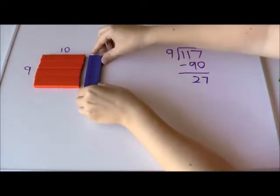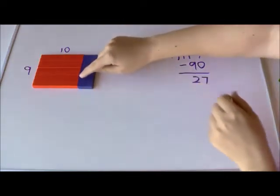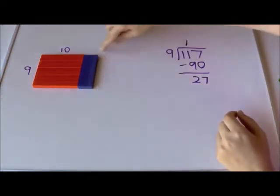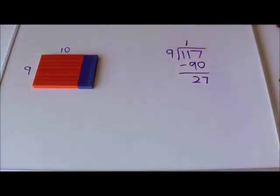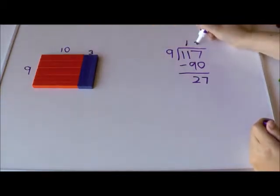Okay, so then we can bring this up here. And we have made a rectangle with 9 on one side and what on the other? 3 on the other. Put the 3 in the ones place.